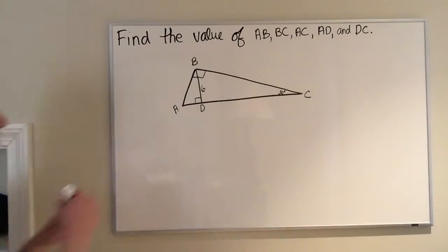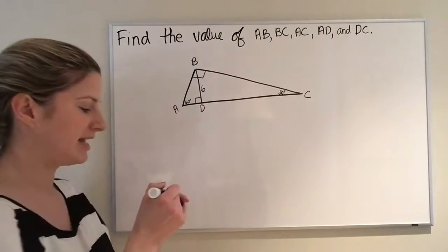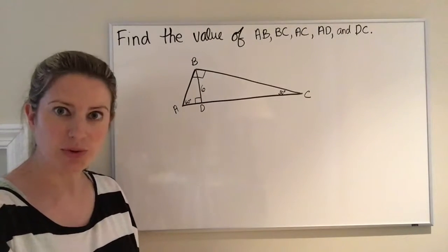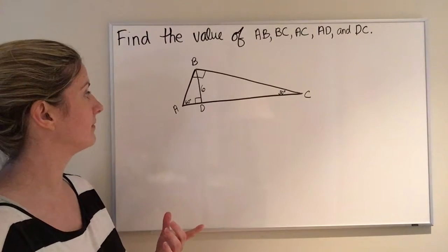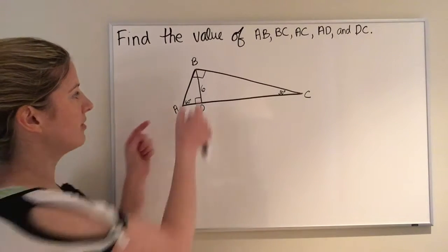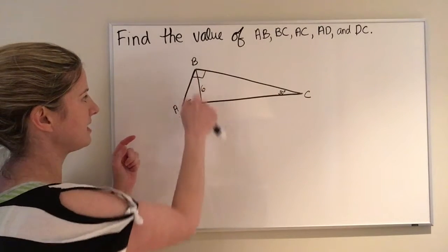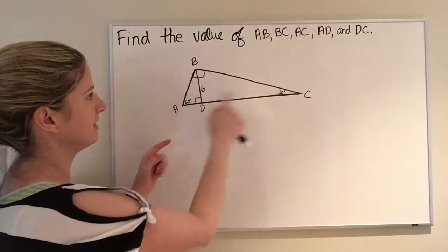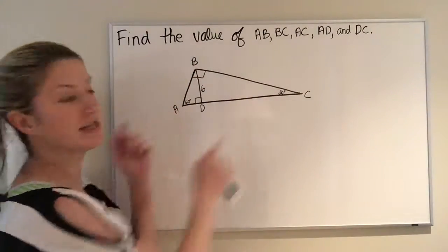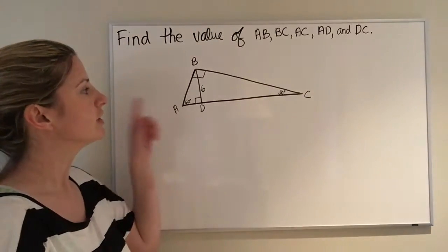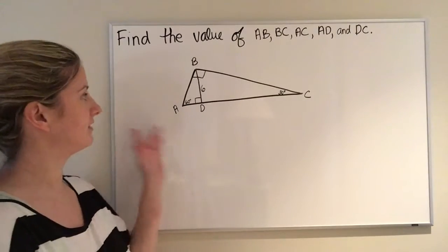So the first thing I would do is write in that this is a 60-degree angle. You actually have three special right triangles here: two small 30-60-90s — triangle ABD and triangle CBD — and then the big one, triangle ABC, which is also a 30-60-90. We're going to use our knowledge of special right triangles to find all the side lengths.